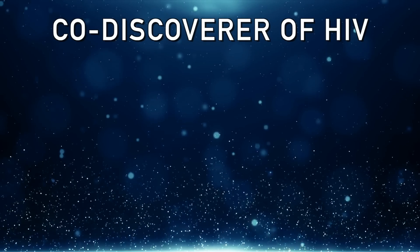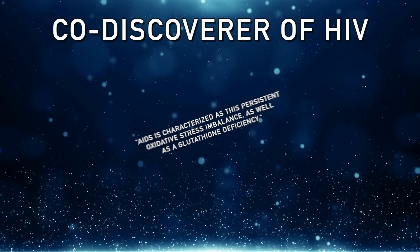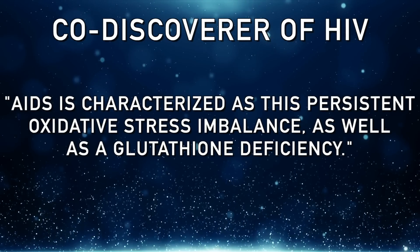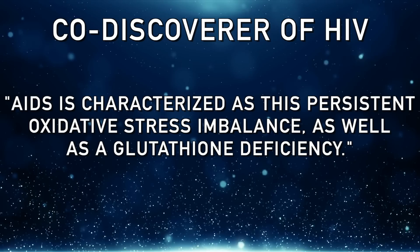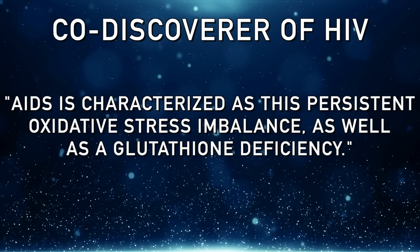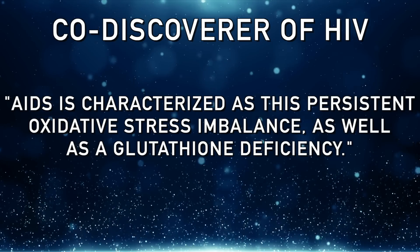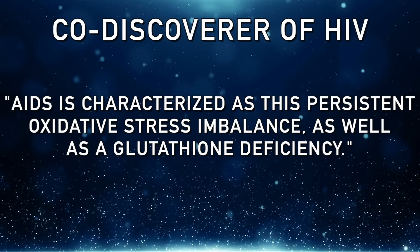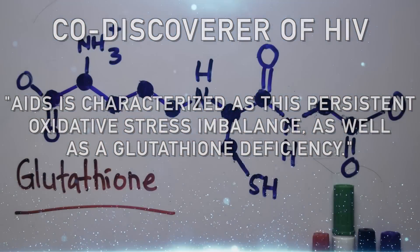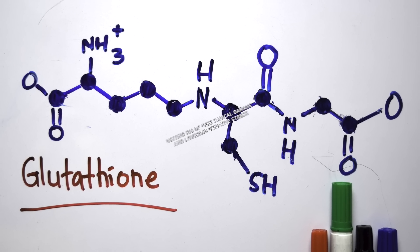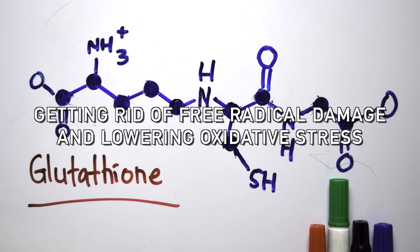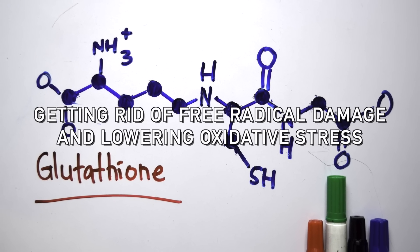Even the co-discoverer of HIV said that AIDS is characterized by persistent oxidative stress and imbalance, as well as glutathione deficiency. Glutathione has everything to do with getting rid of free radical damage and lowering oxidative stress in the body. Without it, the person has no chance of fighting off secondary infections and tumors — it just overwhelms the body and leaves no defenses.